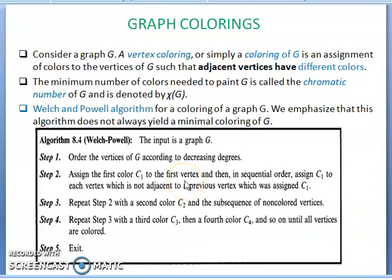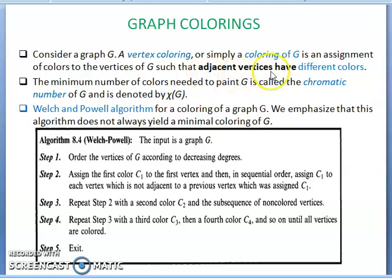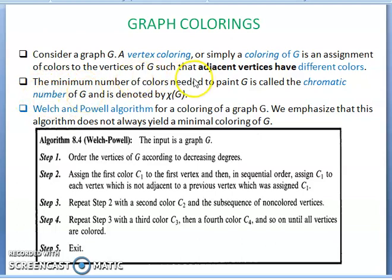Graph coloring: consider a graph G. A vertex coloring of a graph G is an assignment of colors to the vertices of G such that adjacent vertices have different colors. The minimum number of colors needed to color G is called the chromatic number of G. To calculate the chromatic number, there is the Welch-Powell algorithm.